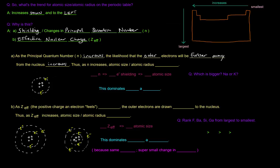So as n increases, atomic size, or atomic radius, increases as well.